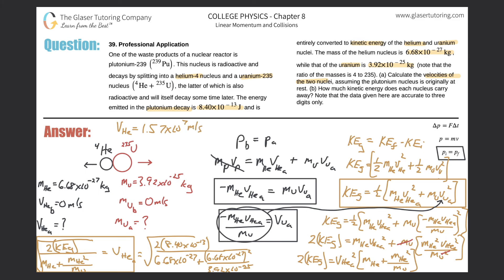Let me double-check the math piecemeal: square 6.68 times 10 to the minus 27, then divide by 3.92 times 10 to the minus 25, add 6.68 times 10 to the minus 27, then take 2 times 8.4 times 10 to the minus 13 and divide by that answer. The velocity of helium after the decay is 1.57 times 10 to the seventh meters per second.